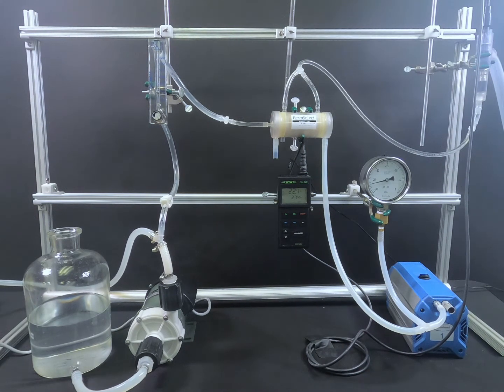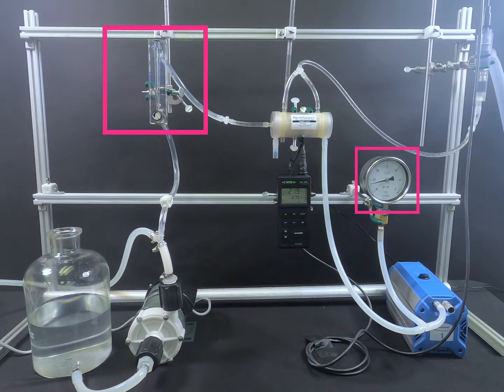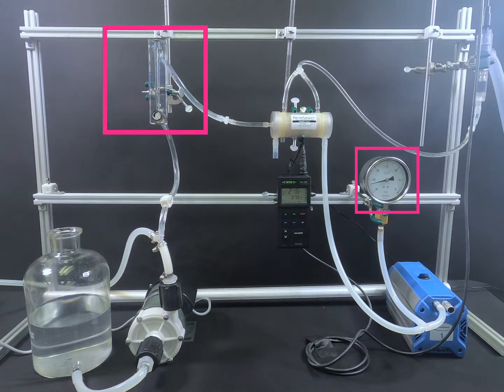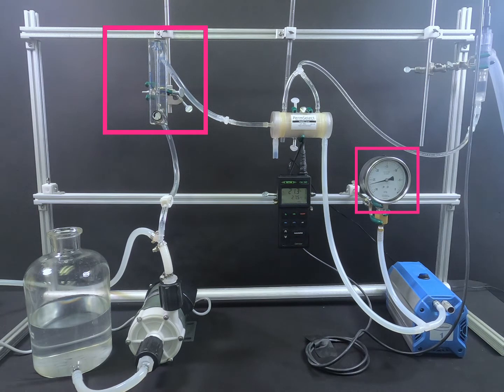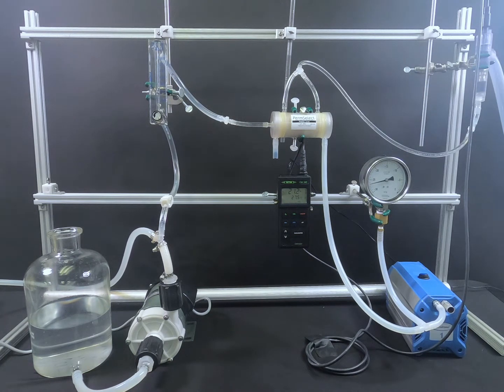The flow rate is 1 liter per minute and the vacuum measures approximately 27 inches of mercury. A lower flow rate and a higher vacuum will produce a lower oxygen percentage for the degassing application.